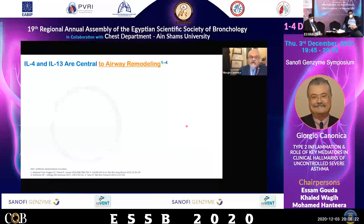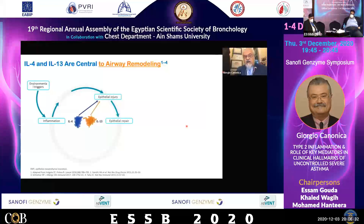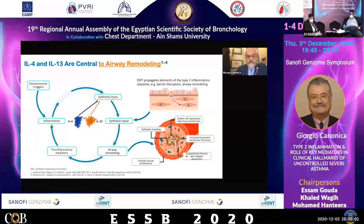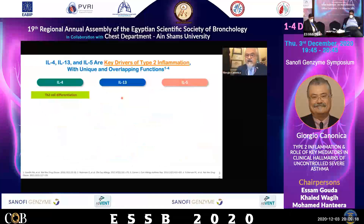What about airway remodeling? Environmental triggers induce the type 2 cytokines, injuring the epithelia, and then there is a repair. But the disruption induces inflammation. We are talking about airway remodeling with different steps: epithelial shedding, smooth muscle proliferation, and basement membrane thickening — and then pro-inflammatory mediators create a circle, with type 2 inflammatory cells and mediators increasing and keeping the process going.